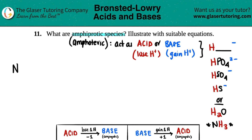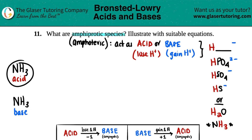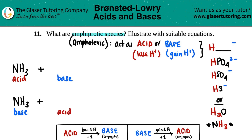Let's do NH₃ because it's the outlier here. We need two equations: one where NH₃ acts as the acid, and one where NH₃ acts as the base — that's how we demonstrate it's amphiprotic. Remember, you can never have two acids or two bases reacting together; it's always one acid and one base. So if NH₃ is acting as the acid, you need to add a definite base, and if it's acting as the base, you need to add a definite acid.